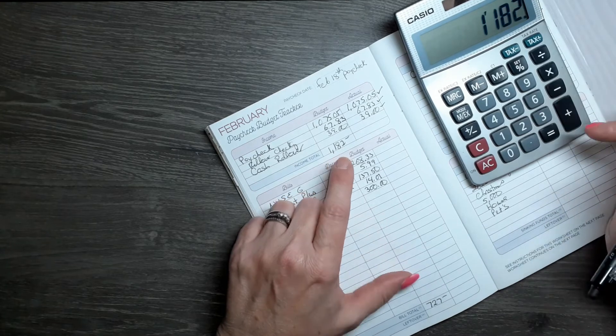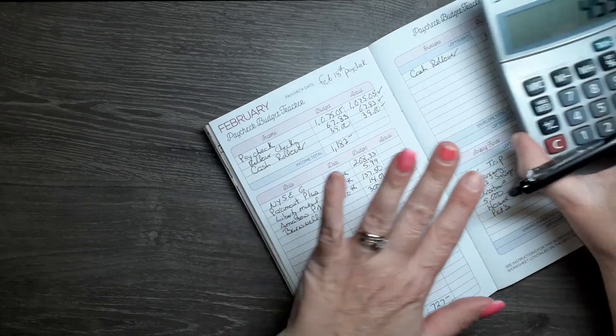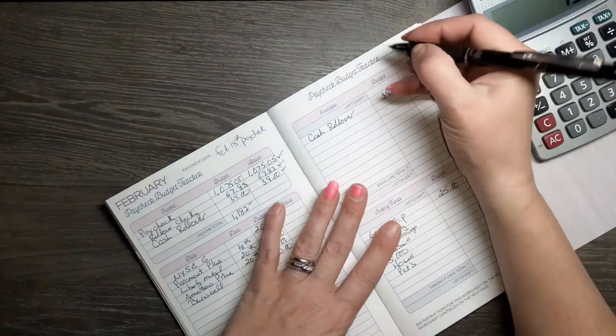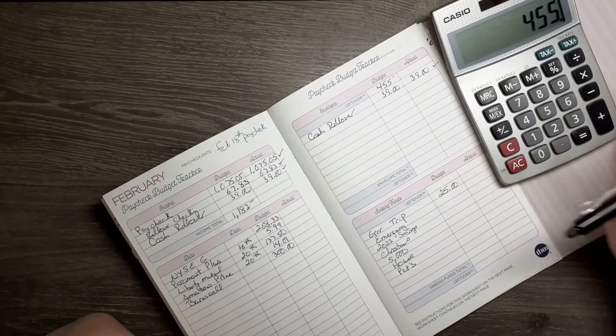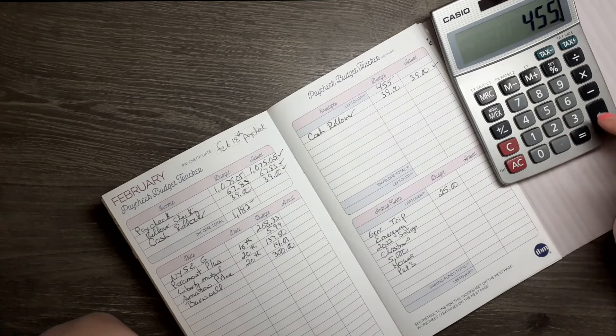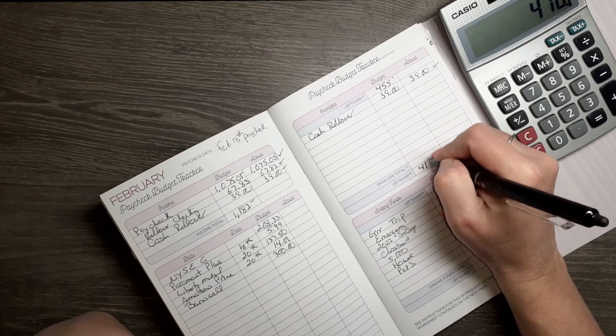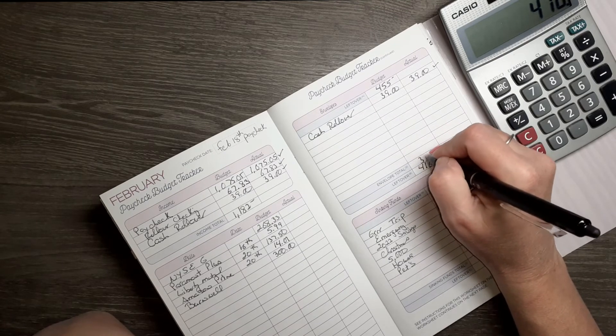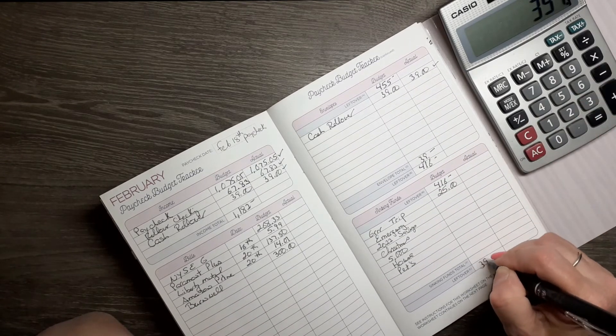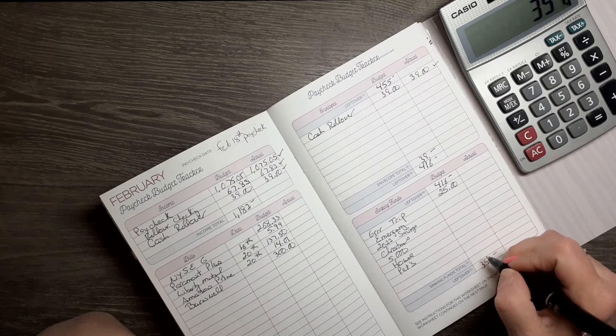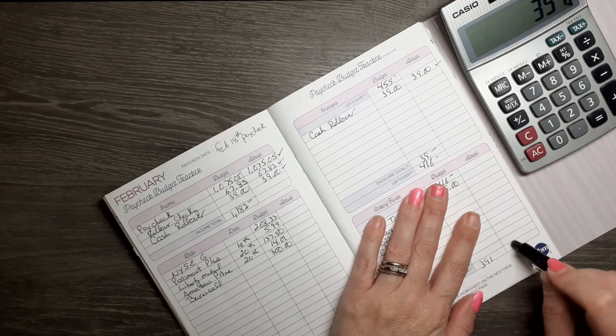$1,182 minus $727 is $455. I need to go to Dollar General and get more Pepsi. Minus $39 cash rollover. Minus $25 is $391. Wow, that's a lot more than I thought. That's too much to leave in my account. Let's figure something else out.